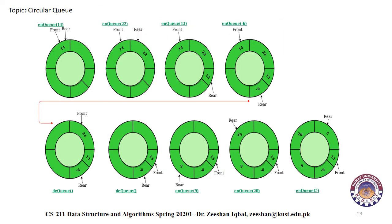This is a graphical representation of a circular queue. First, InQueue 14 is called, so 14 is added and both front and rear point to 14. Next, InQueue 22 is called, so 22 is added and rear moves to 22. Then InQueue 30 is called and rear moves to 13. After InQueue minus six, rear shifts to the minus six position. Next, dequeue is called: the first value 14 is deleted and front moves to 22.